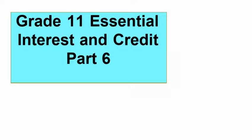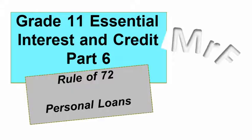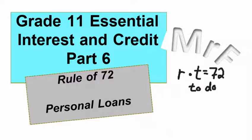Grade 11 Essential Interest and Credit Part 6: The Rule of 72 and Personal Loans.